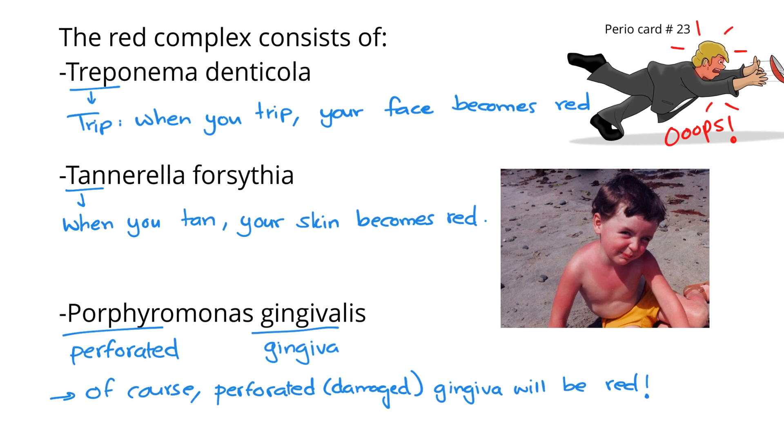So remember, the three red things are: when you trip, when you tan your skin, and perforated gingiva.